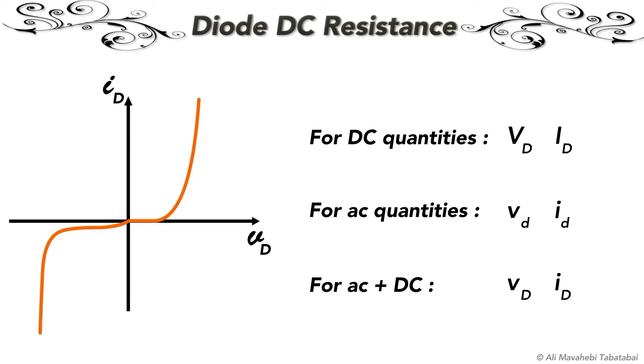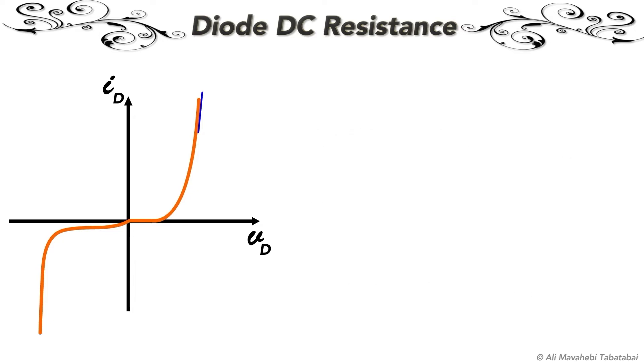Since the current voltage characteristics of a diode is nonlinear, this tangent line has a different slope at each point of the curve. This means that the resistance value is different at each point. How do we assign a fixed point on the diode IV curve? The answer is easy.